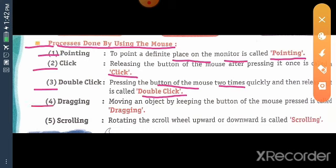Fourth one, dragging. Moving an object by keeping the button of mouse pressed is called dragging. Fifth one, scrolling. Rotating the scrolling wheel upward downward is called scrolling.